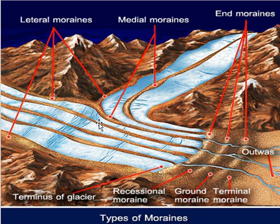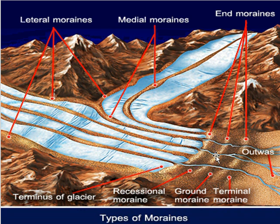Medial moraines are the glacial material transported at the center of the glacier. Glaciers advance until they don't — then they melt and retreat. As they retreat, the material they've been carrying gets deposited at the leading edge. We call these end or terminal moraines. You can see there's a series of them based on a series of melting events.